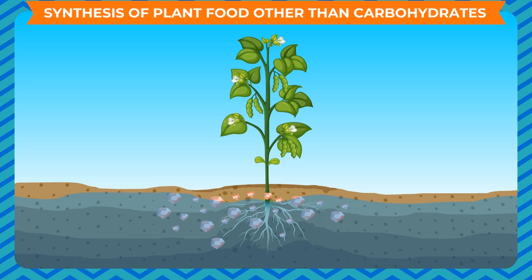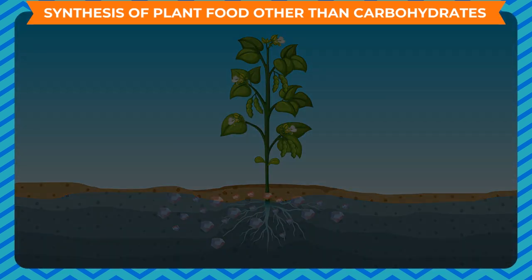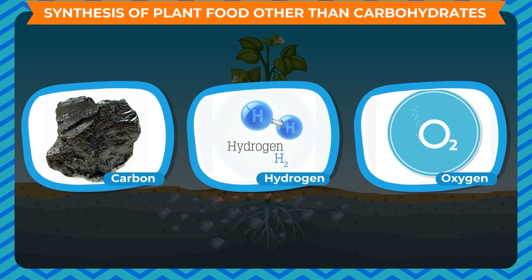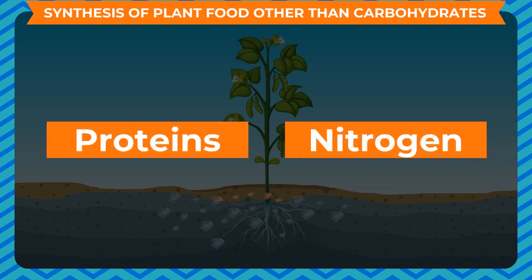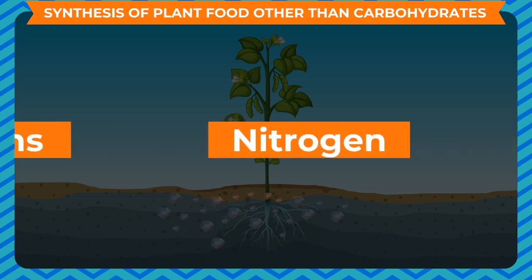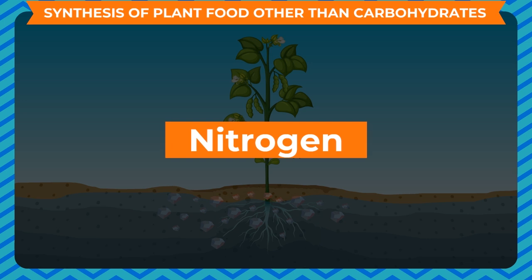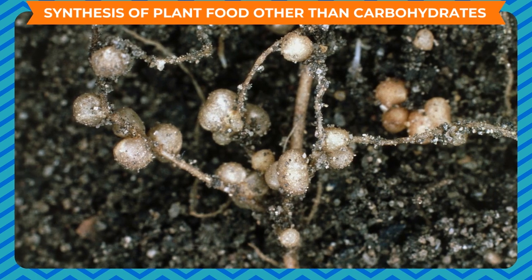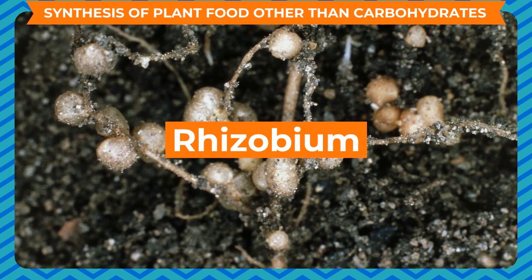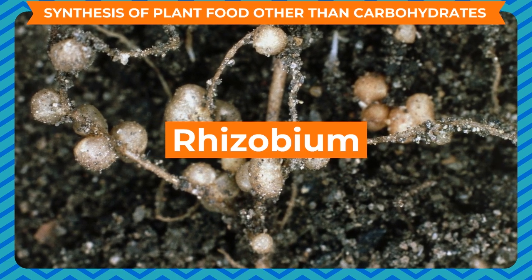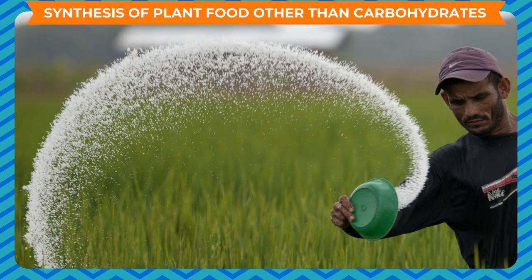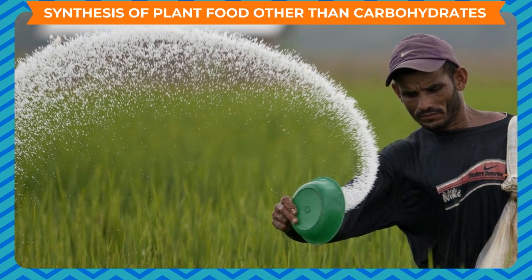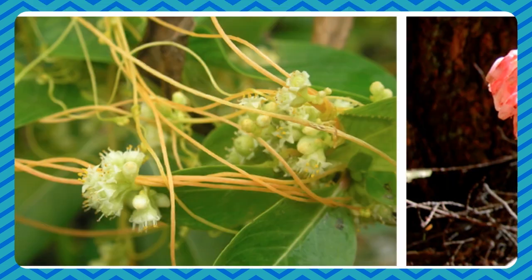Synthesis of plant food other than carbohydrates: carbohydrates synthesized during photosynthesis are made up of carbon, hydrogen, and oxygen. They are used to synthesize other components such as proteins and fats. Proteins contain nitrogen. Although air contains a large amount of nitrogen, plants cannot absorb it directly. Soil contains certain bacteria called Rhizobium that convert atmospheric nitrogen into water-soluble compounds, which plants absorb along with water. Farmers also add fertilizers rich in nitrogen to the soil.